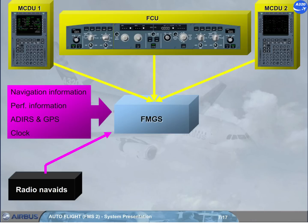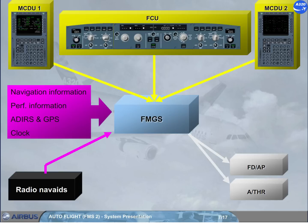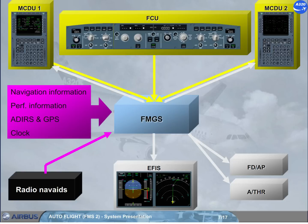The FMGS provides outputs to the Flight Directors, FDs, and autopilots, APs, for pitch, roll, and yaw control. The autothrust, ATHR, for thrust control. The MCDUs and EFIS for the display of information, and the navigation radios for the automatic tuning of radio aids.